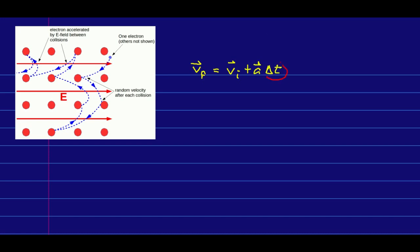In particular, what I mean by this delta t is the time since last collision. And we know that the acceleration can be found from the E field. And that q is just negative e, and the m is the mass of the electron.